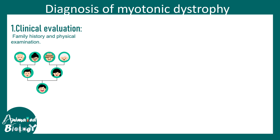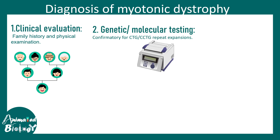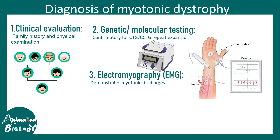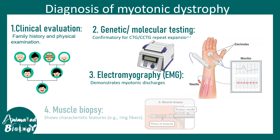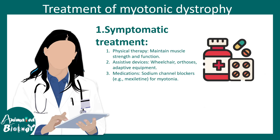Diagnosis of myotonic dystrophy is done by clinical evaluation — looking at family history for this kind of muscle weakness is important. Physical examination is also important, such as asking the patient to clench the fist, open it, open and close the eye. Since there is trinucleotide repeat expansion, the repeat expansion can be PCR amplified and the length of the repeat analyzed. There is also electromyography to monitor the degree of muscle weakness, and in some severe cases a muscle biopsy followed by histological analysis may be prescribed.